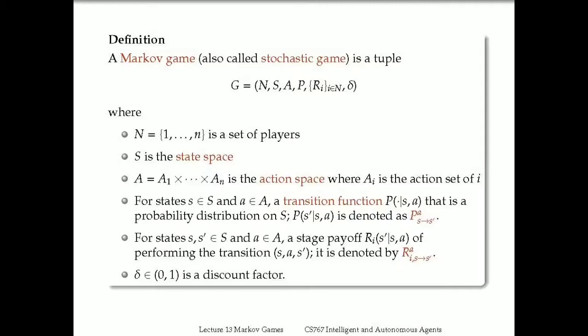That's the transition function. We also have a reward function: given states S and S' and the joint action profile A, the stage payoff R_i(S' | S, A) is the reward that agent i receives from the transition from S to S'. So for every agent we have a separate reward function R_i indicating the reward to agent i. And we also have the discount factor delta. That's the full definition we use for the Markov game.